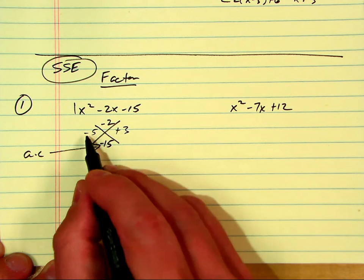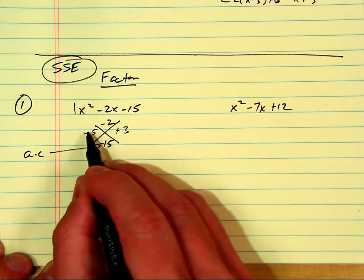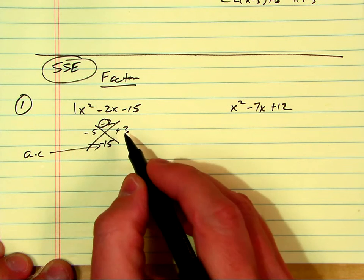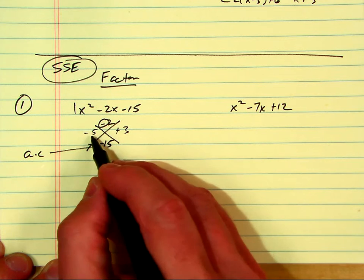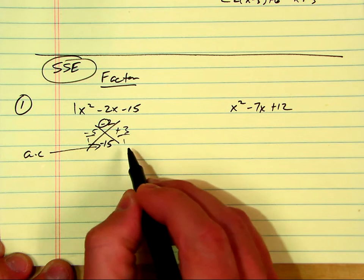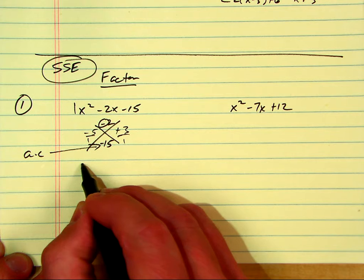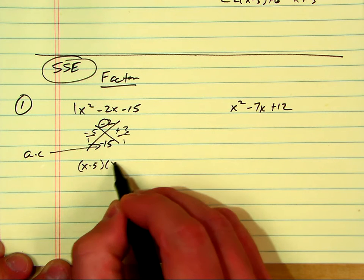Do yourself a favor, keep the signs with it as well. The bigger factor always matches that sign. It has to. So in this case, let's go ahead and remember to divide by 1 and make our binomials. That's x minus 5, and that's x plus 3.